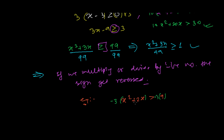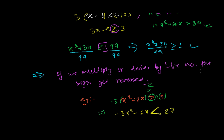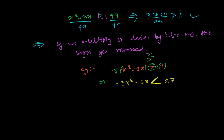After multiplying by -3, the greater than sign becomes a smaller than sign. So it becomes -3x² - 6x < -27. Keep in mind: the sign gets reversed. Just the symbol changes — the sign gets reversed.